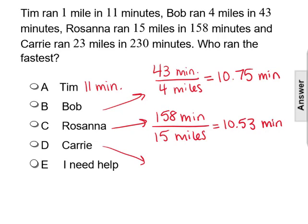Finally, Carrie, let's see if she's the fastest or if Rosanna is going to be the fastest. So Carrie, it took 230 minutes, but that was to run 23 miles. If we divide 230 by 23, that gives us 10.